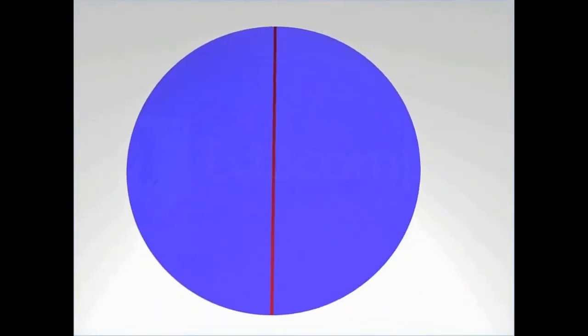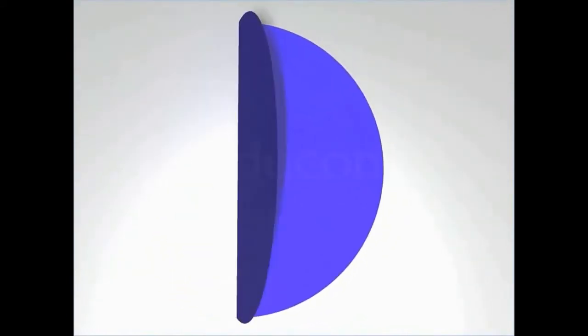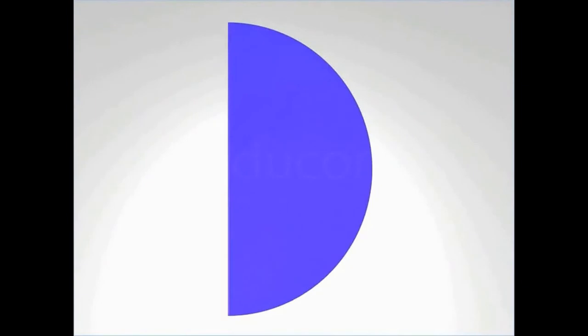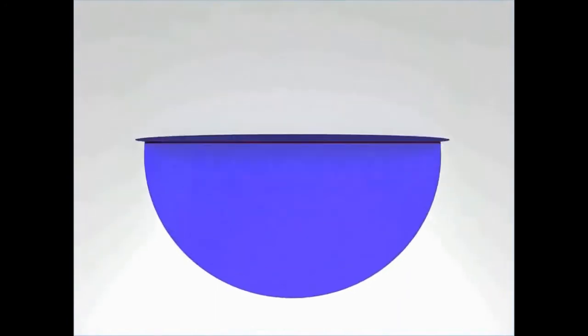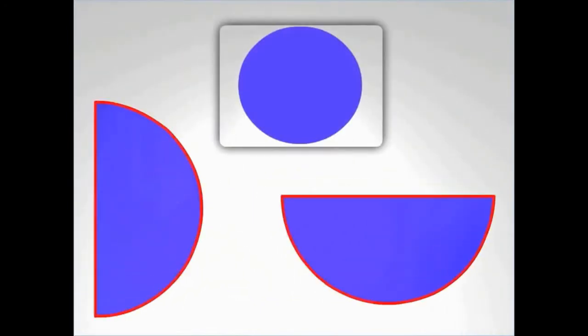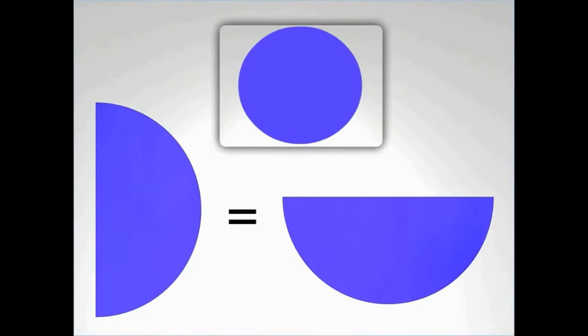Consider a circle. If you divide it by folding it along its vertical diameter, you obtain a semicircle. Similarly, if you divide it by folding it along its horizontal diameter, you again get a semicircle. Although the obtained half circles appear to be different, they are the same. This helps to conclude that things which are half of the same thing are equal to one another, which is another axiom by Euclid.